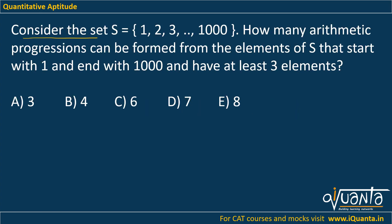The question is: consider the set S having elements 1, 2, 3 up to 1000. How many arithmetic progressions can be formed from the elements of S that start with 1 and end with 1000 and have at least 3 elements?